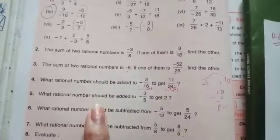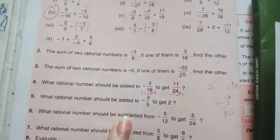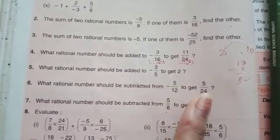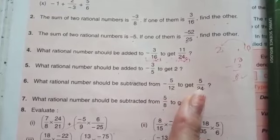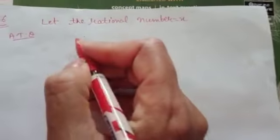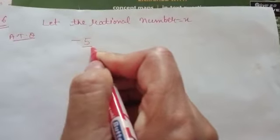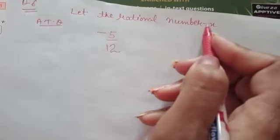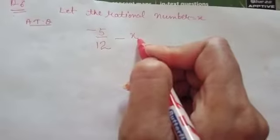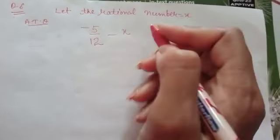Next is a bit different — like we were adding, now we will subtract, but it is the same process. What rational number should be subtracted from this to get this result? So we will let the rational number equal to x. What number should we subtract — minus 5 over 12 — we will subtract, so we can write minus x to get minus 5 over 24.